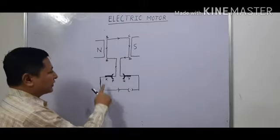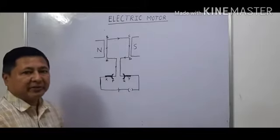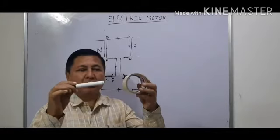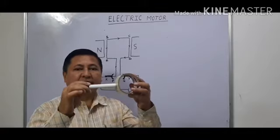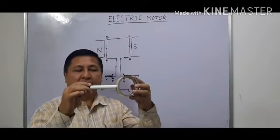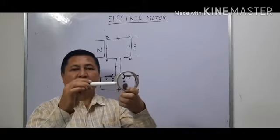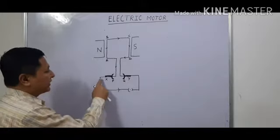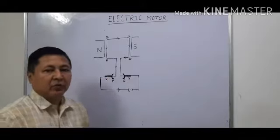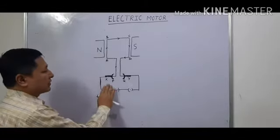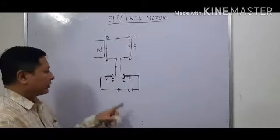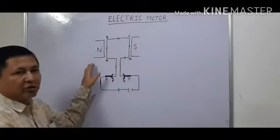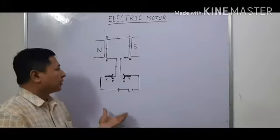Attached to the split rings P and Q, we can see X and Y — these are carbon brushes made up of graphite. As you know, graphite is a good conductor of electricity. They are just touching the split ring; they are not attached to or joined with it. When the split ring rotates, the brushes do not get entangled. If we directly connected the wire to the split ring instead, the wire would get entangled and break. It is then connected to a battery which supplies the electric current, and there is also a key.